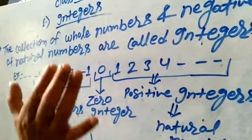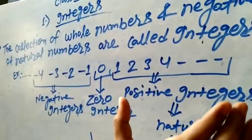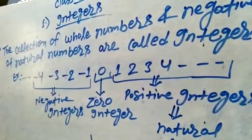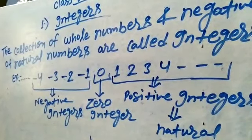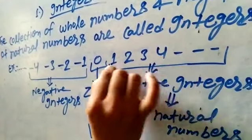If we classify integers, then you will be positive integers, which we can also call natural numbers. All counting numbers are called natural numbers.